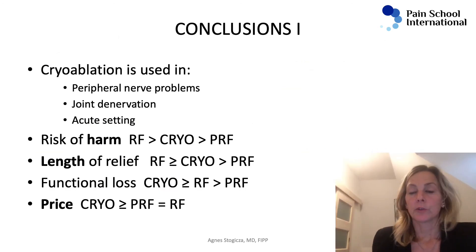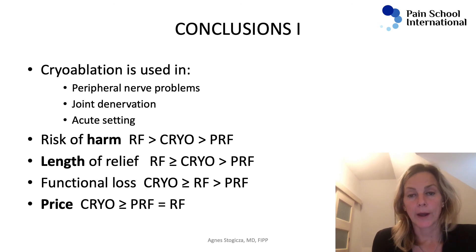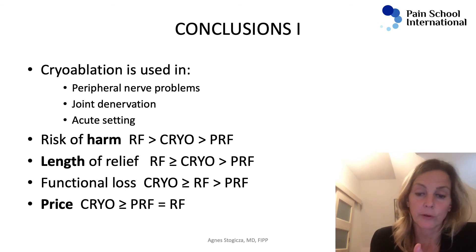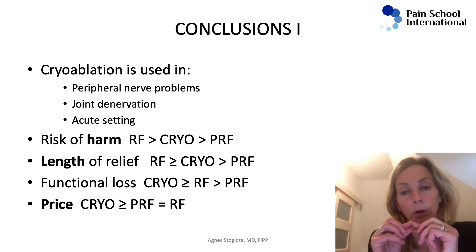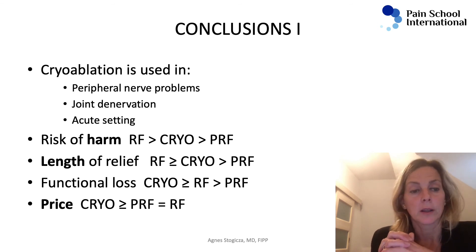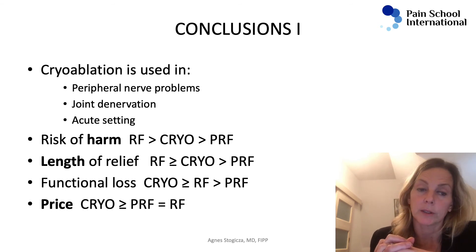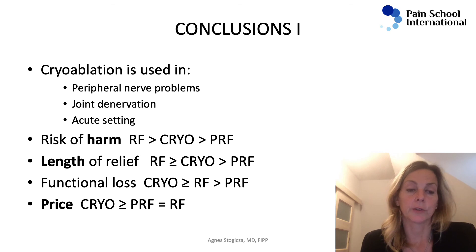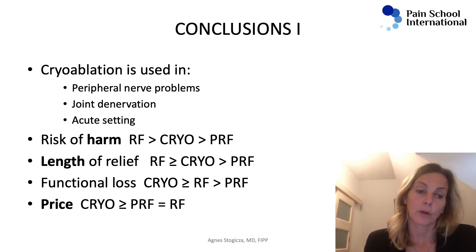To summarize: you can use cryoablation for any peripheral nerve where we understand the function of the nerve — so we understand what we will take away. We need a good diagnostic block and must be able to identify the nerve with ultrasound, fluoroscopy, or landmark, but you need to be really sure because the ice ball will be only so big. You can use it for joint denervation — there are some studies for knee denervation — and also in an acute perioperative setting. The risk of harm with radiofrequency is theoretically bigger than with cryo because of coagulation of the nerve, and PRF should be the least harmful, assuming we are not damaging the nerves with the needles themselves.